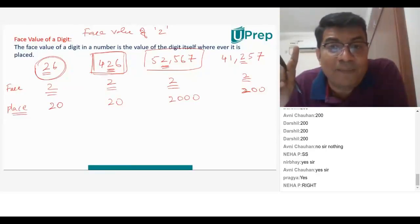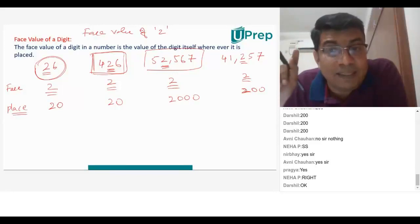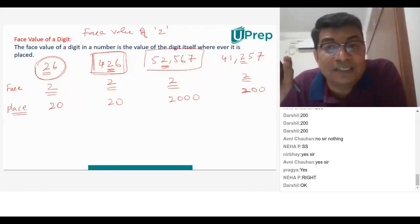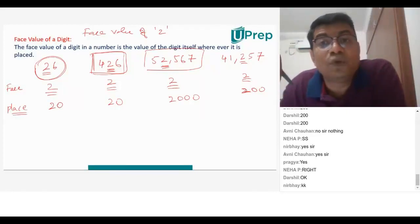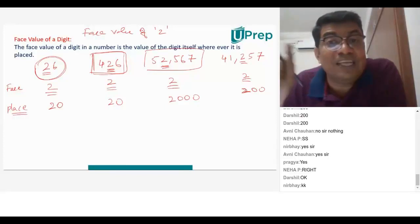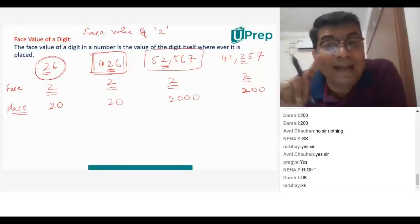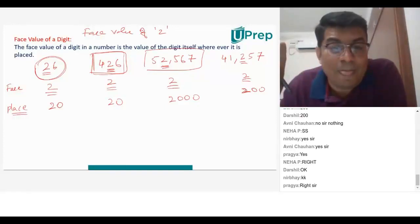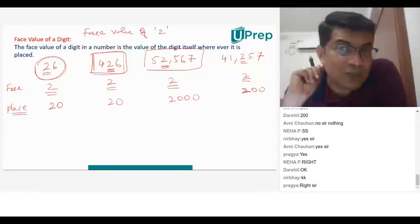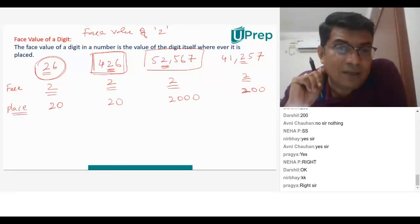Children often make this mistake, so remember: place value changes with the position of where the number is, but face value will never change. Does that make sense to everyone?